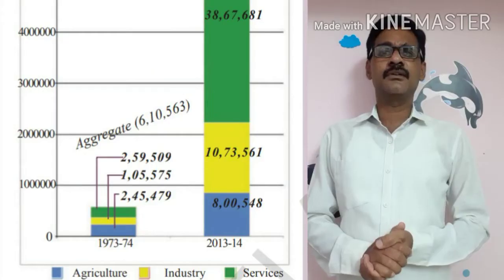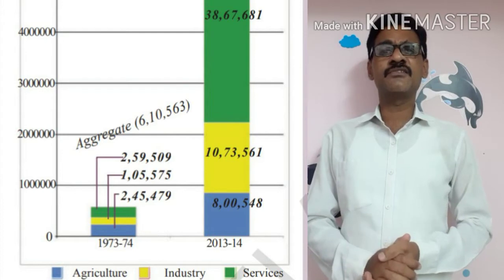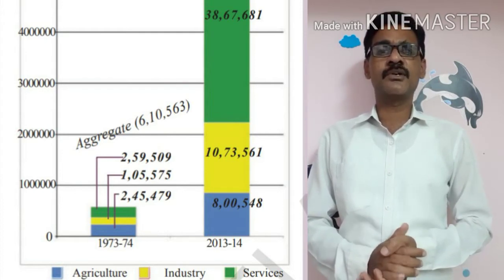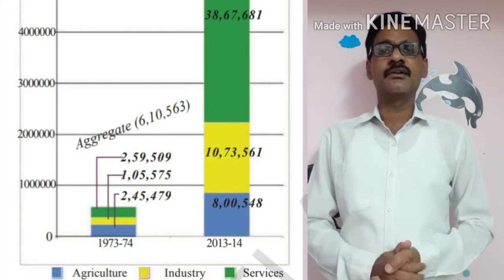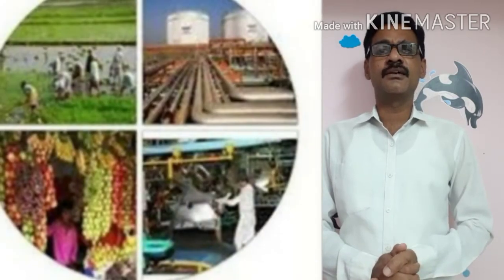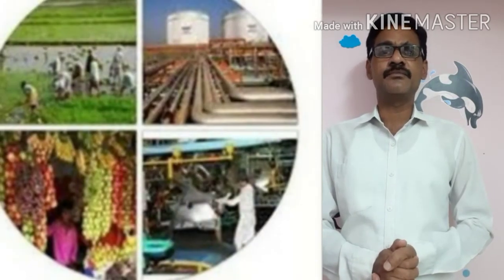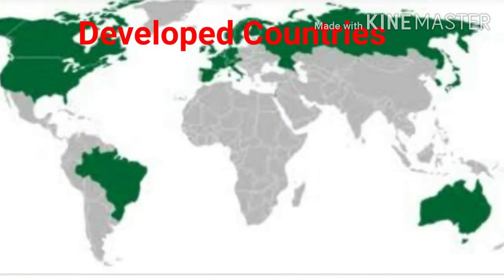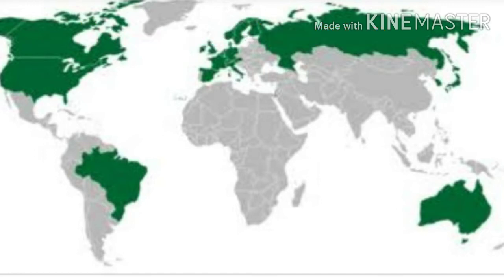Good morning children. In the earlier class we discussed about the GDP, gross domestic product, and the growth rate of GDP, and how the three sectors — primary, secondary, and tertiary — contributed to the GDP.